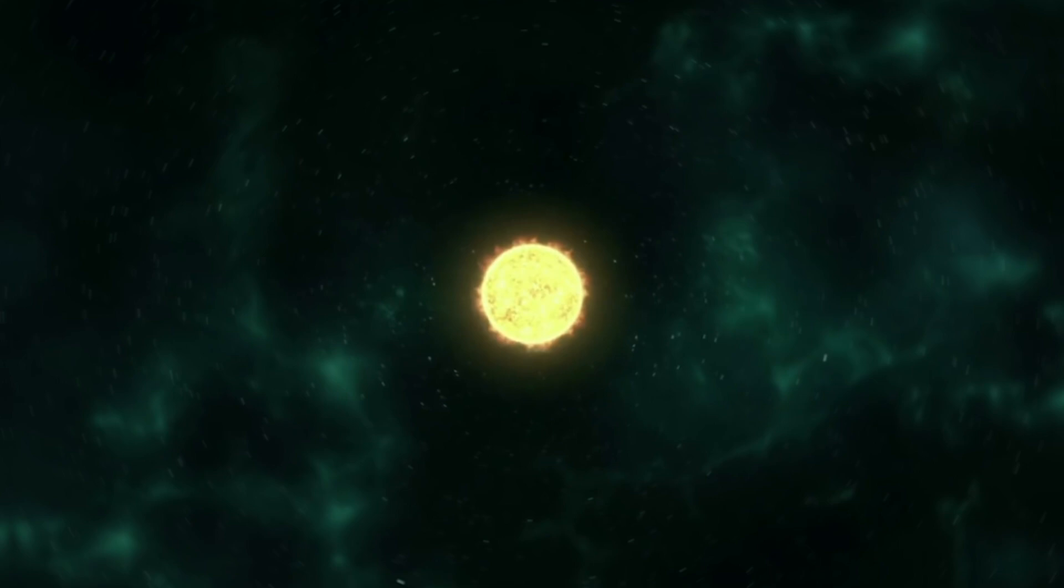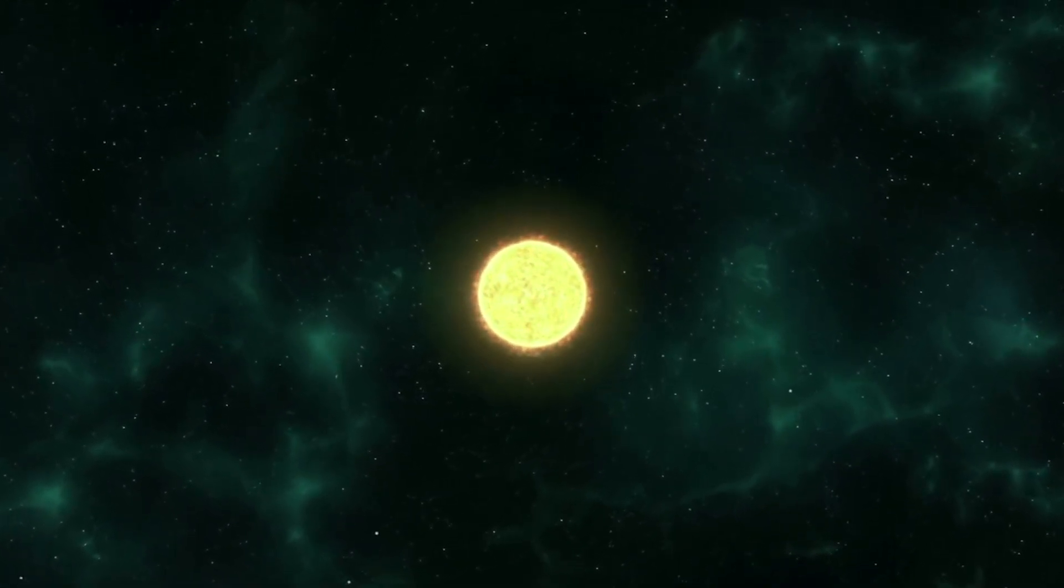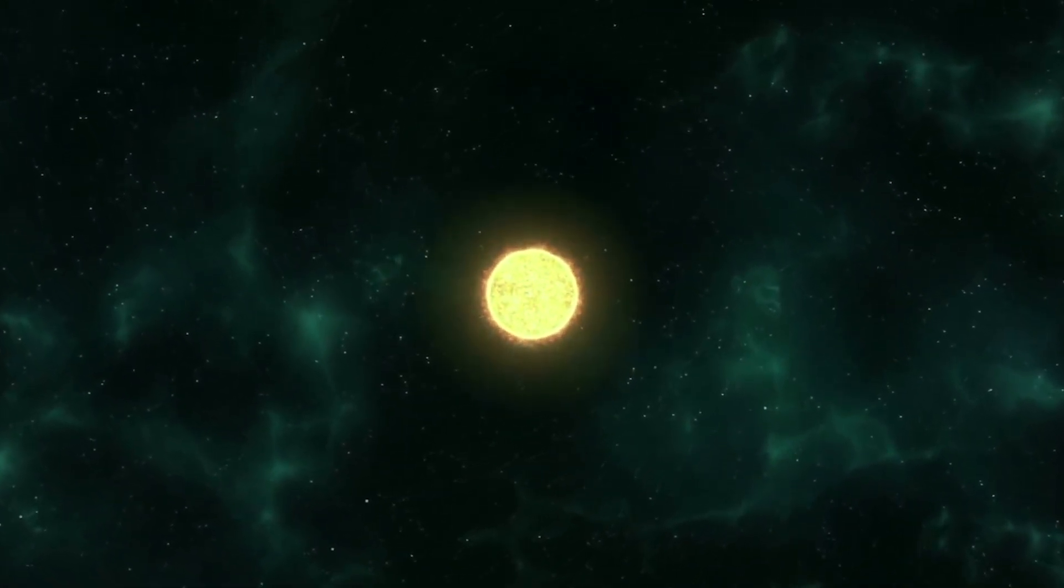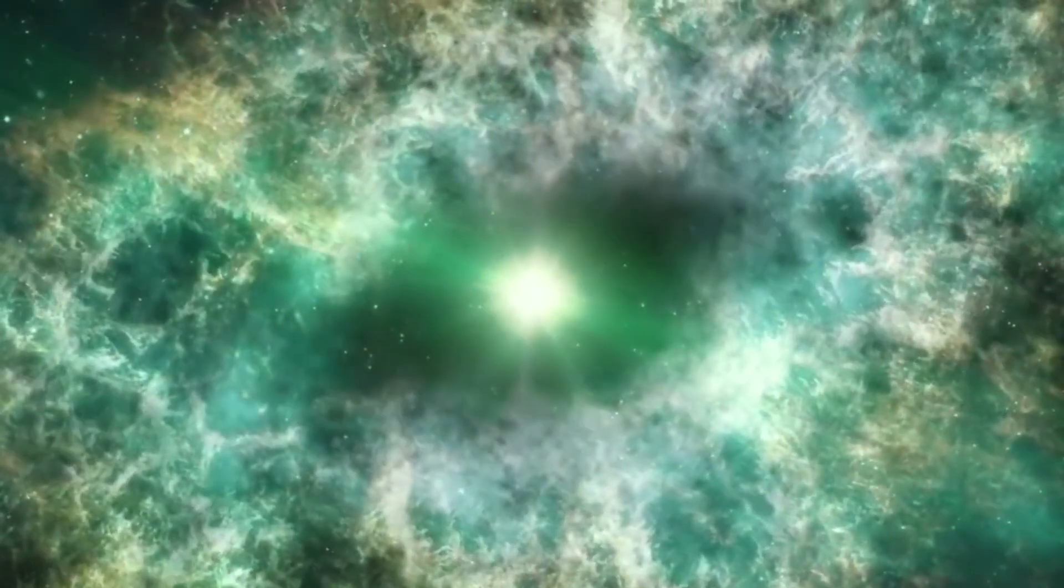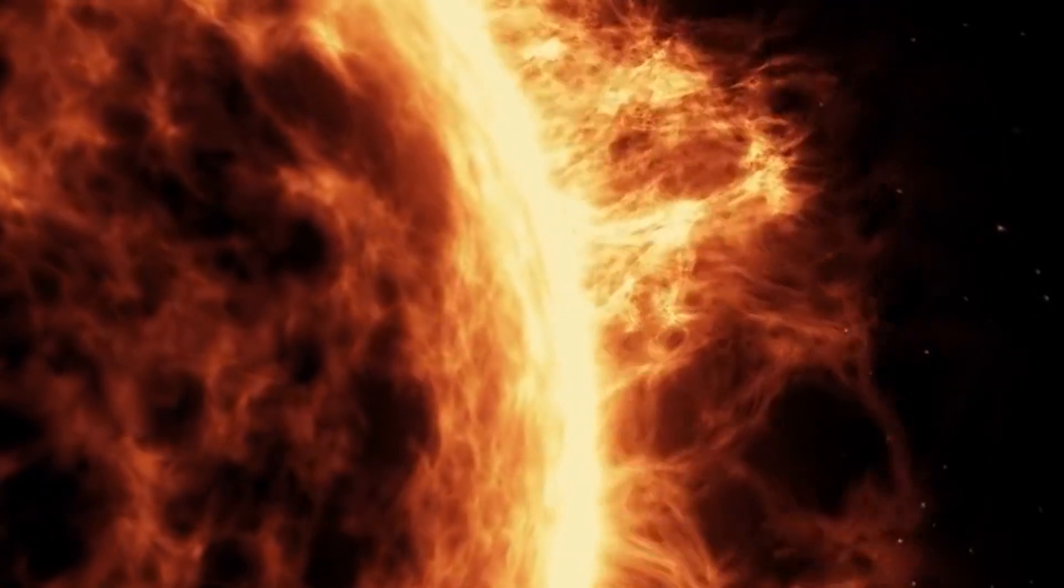But in 100 million years, our Sun will also change. It will become 1% brighter and warmer, which could ultimately prove deadly. Yet, the question remains, could this process be slowed down?